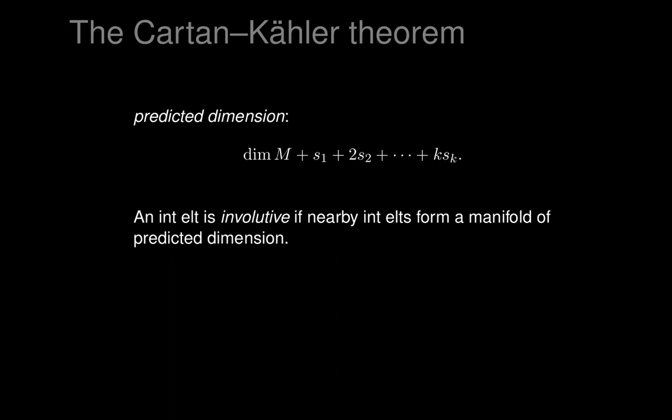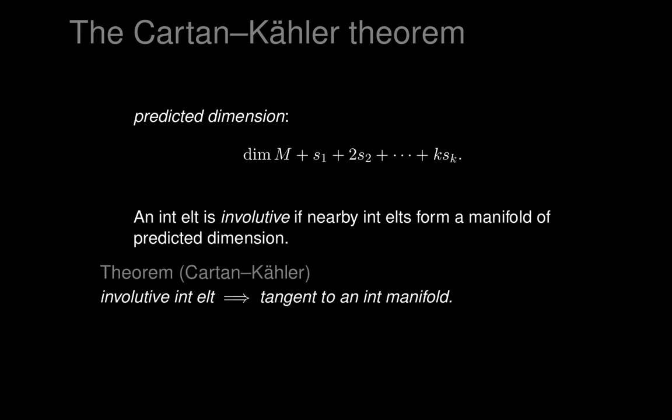To check involutivity, we take a P-dimensional integral element E_P, wiggle it among nearby integral elements, and see whether they form a manifold of predicted dimension. The Cartan-Kähler theorem is the main result: if you have an involutive integral element, then it is tangent to an integral manifold. This gives us a condition that allows pure linear algebra to calculate involutivity — using polar equations and predicted dimension — and decide whether an integral manifold exists.